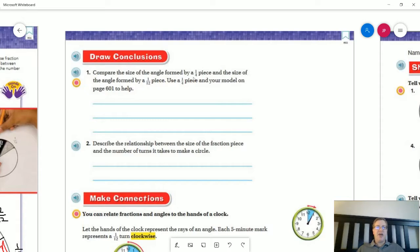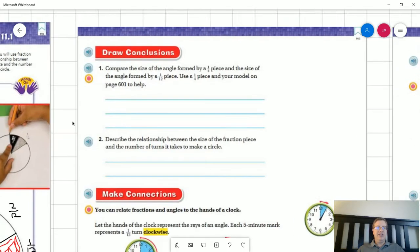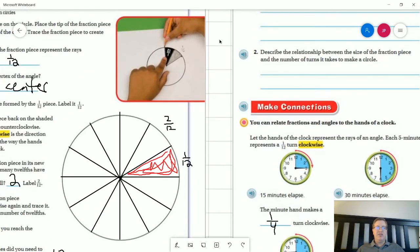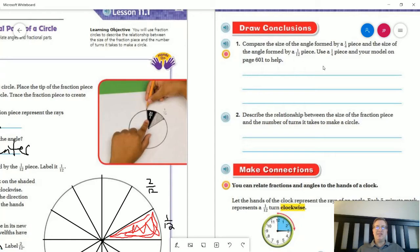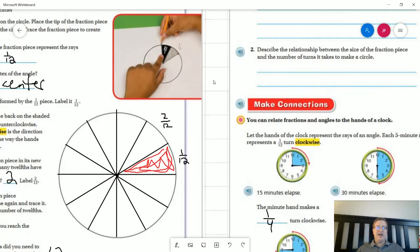So compare the size of the angle formed by a one-quarter size piece and the size of an angle formed by a 1/12 size piece. So what we can do is actually go back and look at this particular model. So what would we say about the size for an angle that would take up 1/4th, which would be three of these individual pieces, compared to just one? So think about that for just a second.